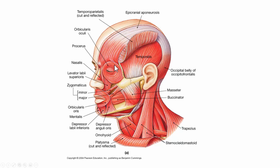We have the orbicularis oculi, which surrounds the eye. On top of the nose, sitting like a Breathe Right strip, we have the nasalis. At the bridge of the nose, we have the procerus. These two muscles we'll be able to see a little bit better from the frontal view.